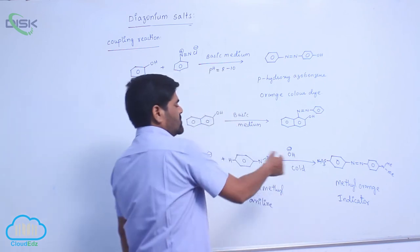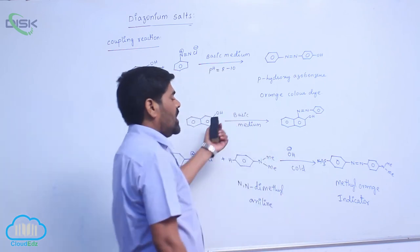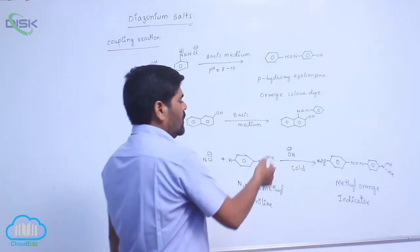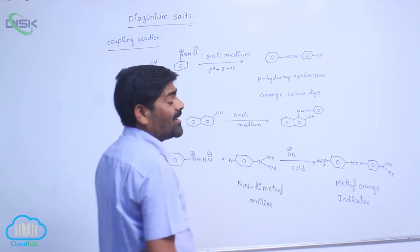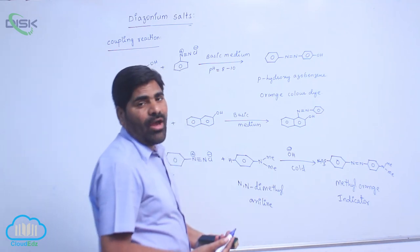This is also an example of diazonium coupling reaction. This methyl orange can act as an indicator in volumetric analysis.